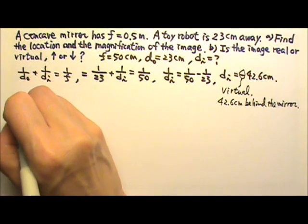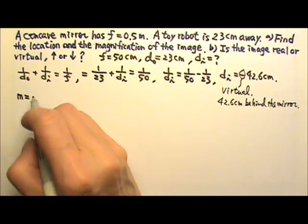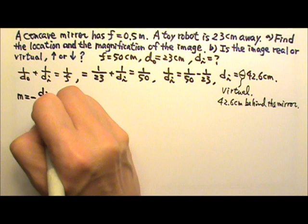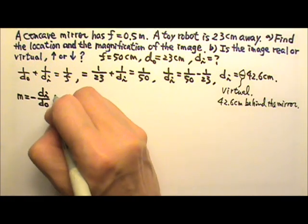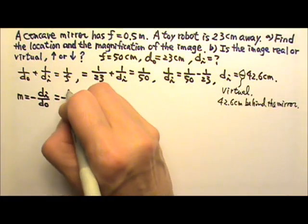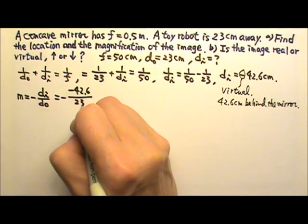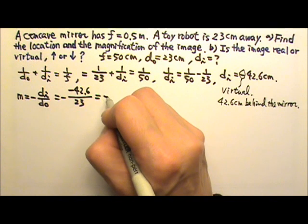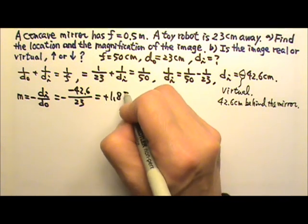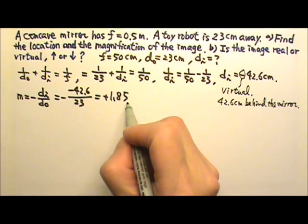Now let's find the magnification. The magnification is negative dI over dO. So it will be negative dI is negative 42.6, dO is 23. So this gives us a positive 1.85. Magnification has no unit.